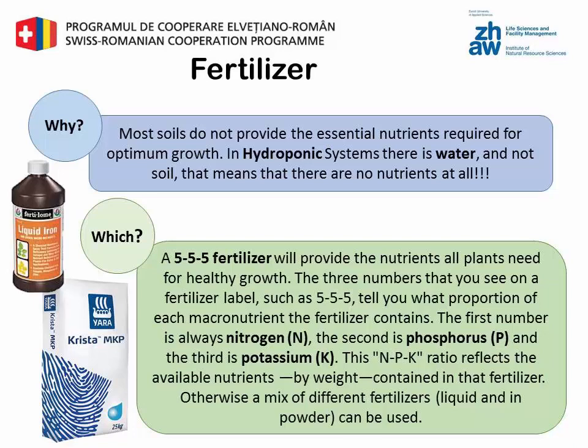A 5-5-5 fertilizer will provide the nutrients all plants need for healthy growth. The three numbers on a fertilizer label, such as 5-5-5, tell you what proportion of each macronutrient the fertilizer contains. The first number is always nitrogen, the second is phosphorus, and the third is potassium. This NPK ratio reflects the available nutrients by weight contained in the fertilizer. Otherwise a mix of different fertilizers, liquid and in powder, can be used.